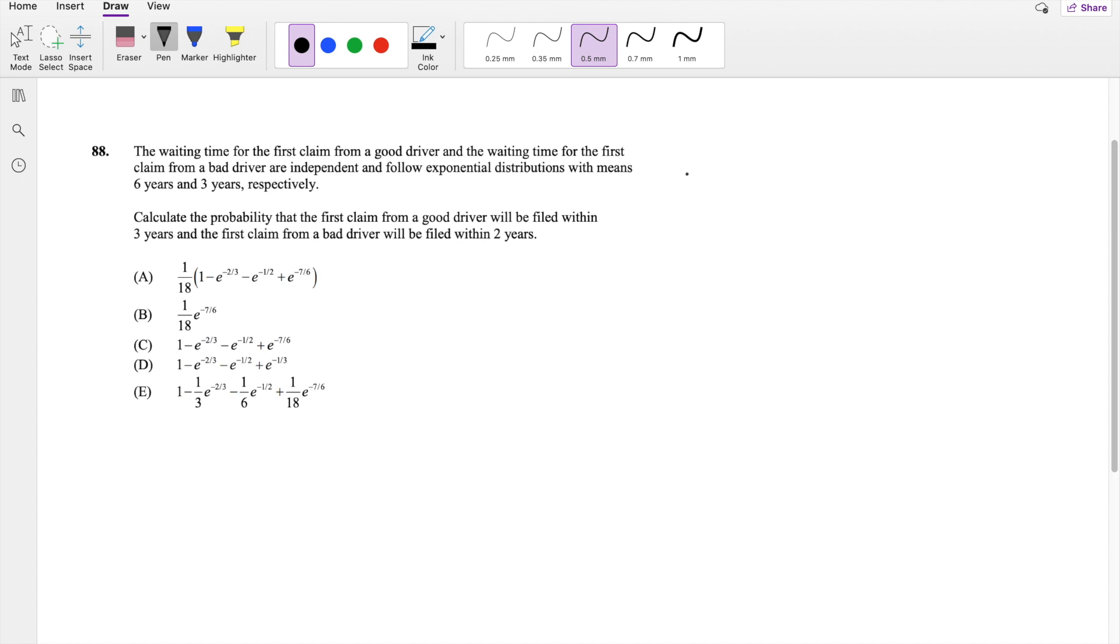So they say for a good driver, the waiting time for the first claim is exponentially distributed with a mean of 6. And for a bad driver, it's exponentially distributed with a mean of 3.